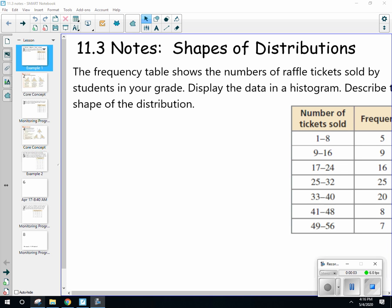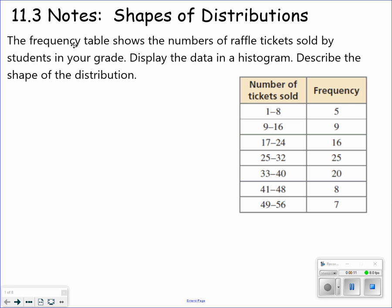All right, welcome back. Hananiga Algebra 1. We're going to move on to section 11.3, shapes of distribution. So a lot of times we're going to talk basically about histograms today. The frequency table shows the number of raffle tickets sold by students in your grade. Display the data in a histogram and describe the shape of the distribution.